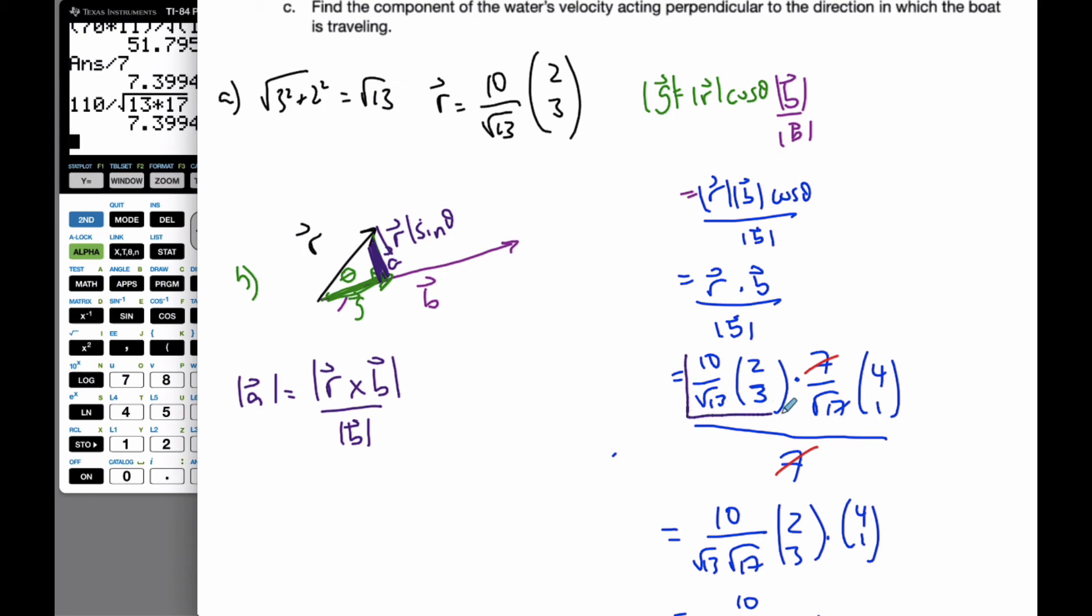And again, here is my R, and here is my B. And what I can do is I can pull these out again. I can pull out the 10 over root 13 times 7 over root 17. And then I'm going to cross (2, 3), now that's a 2 by, I put a 0, it means I can cross product, a 3 by 3, cross it by (4, 1, 0). And this will be divided again by B, which is 7.